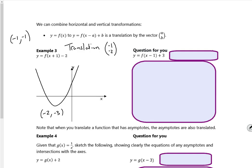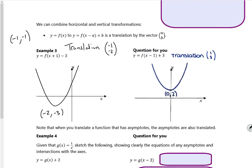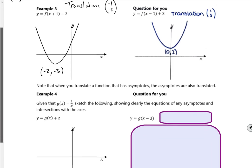One for you. So it goes right 1 and up 2. So right 1, up 3, sorry. So the vertex goes to 0, 2.